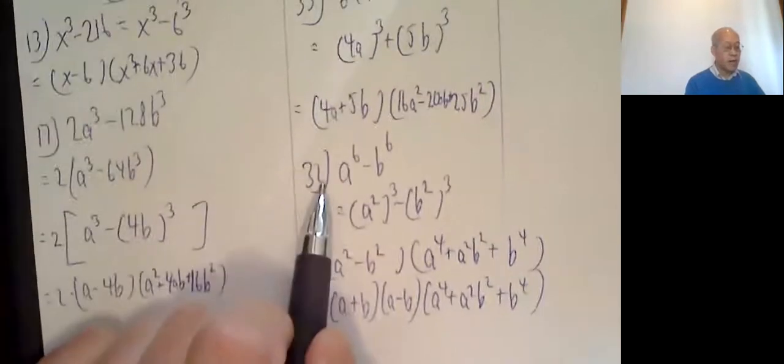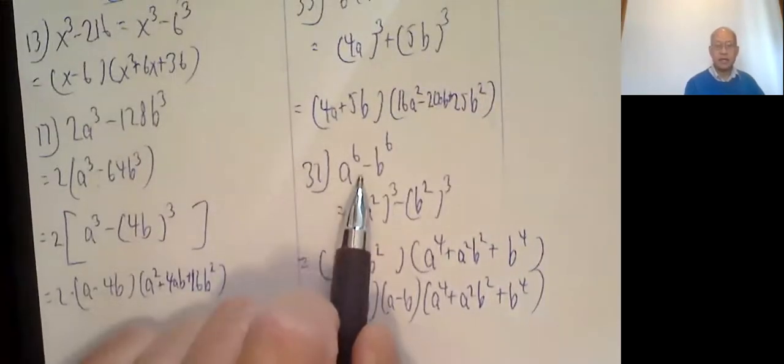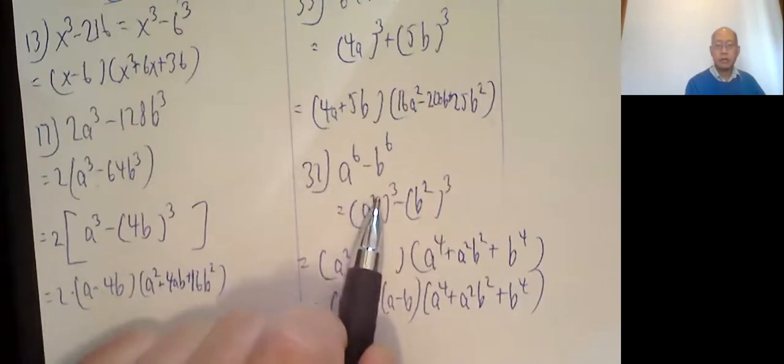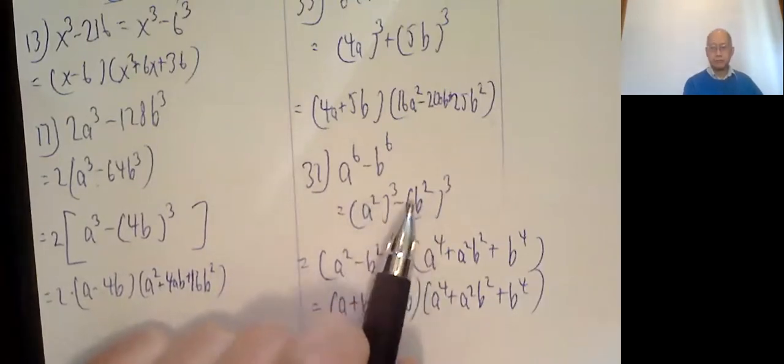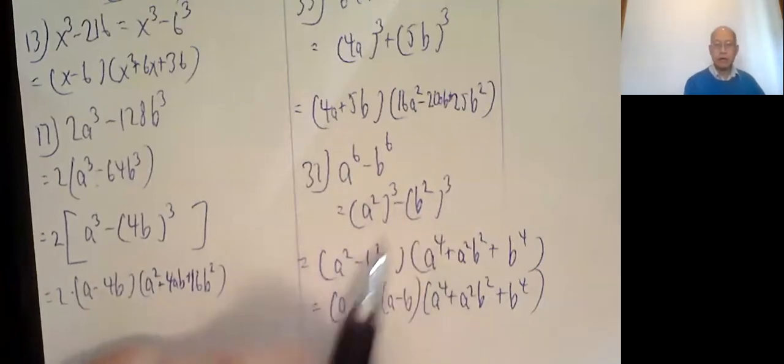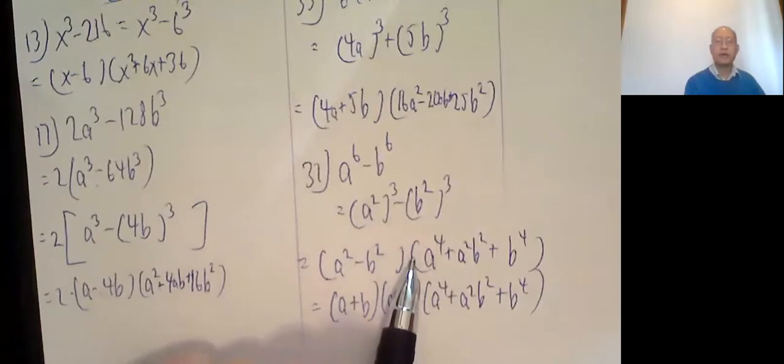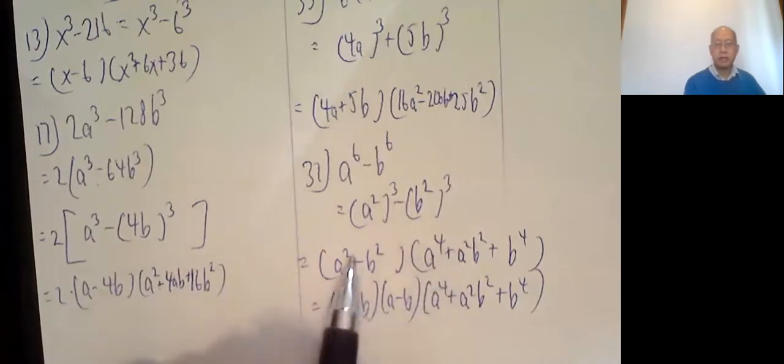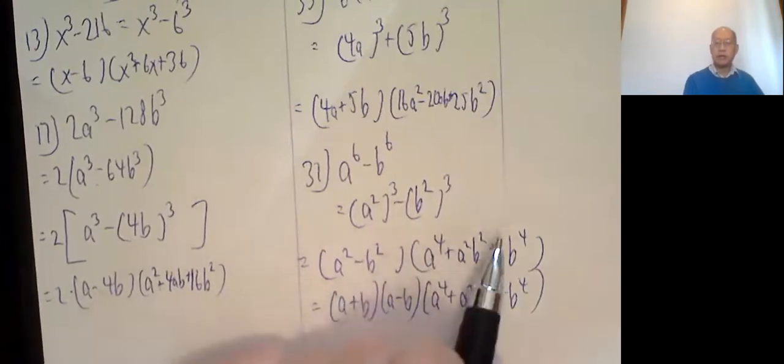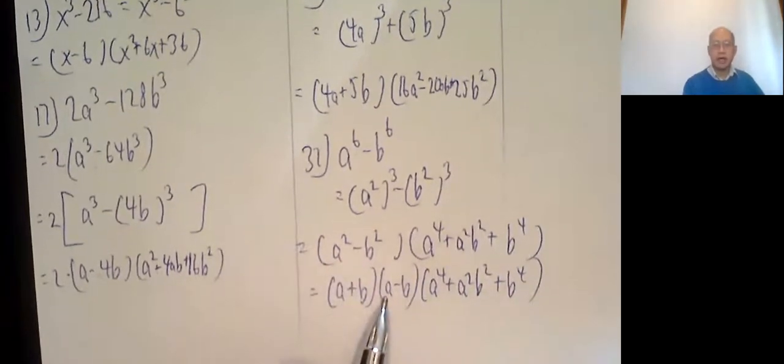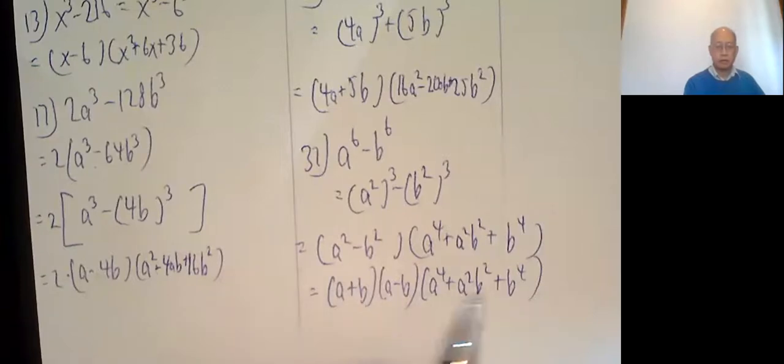This one's a little bit harder. a to the 6 minus b to the 6. Treat it as a squared cubed minus b squared cubed. So this is a squared minus b squared. a squared squared, a to the 4th. Plus the product of these, a squared b squared. Plus b squared squared, b to the 4th. And you might recognize this factors into a plus b, a minus b. And then we leave this one alone.